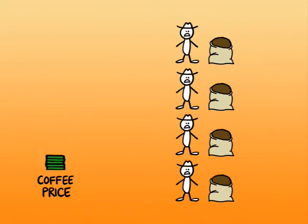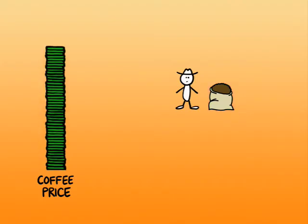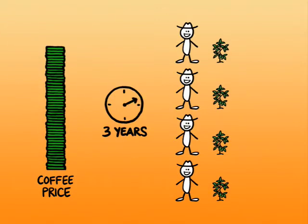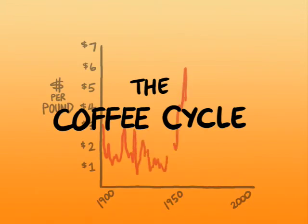So then prices might be too low for farmers to make a living. They lose money and they're forced to abandon their farms. Of course, this now results in a low supply of coffee, which means a return to high prices. So farmers get all excited again and rush to plant more coffee, and the whole thing repeats all over again. This phenomenon is called the coffee cycle, and it helps explain why coffee prices are so unstable.